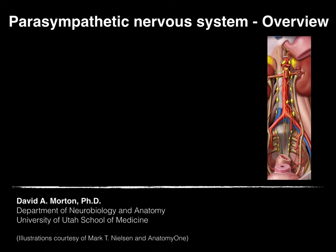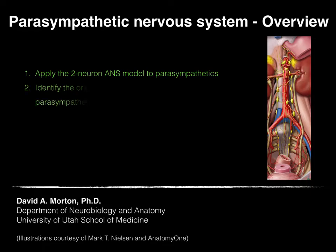Let's talk about the parasympathetic nervous system and give an overview. Our objectives are to apply the two-neuron autonomic nervous system model to parasympathetics, and we'll identify the origin of preganglionic and postganglionic parasympathetic pathways.